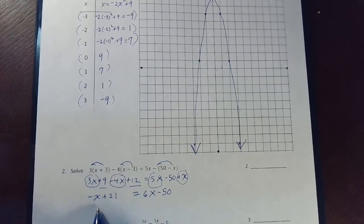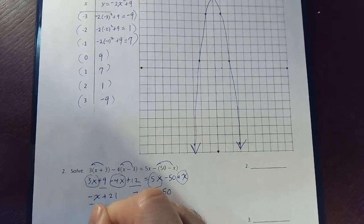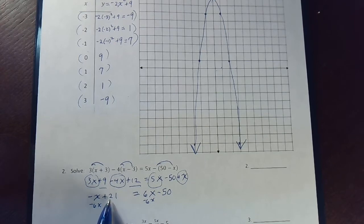All right, I'm going to subtract 6x from both sides. I could add x to both sides, but I like to get x's on the left, just a personal preference. So I'm going to do a minus 6x, a minus 6x. And at the same time, I'm going to do two things in one step.